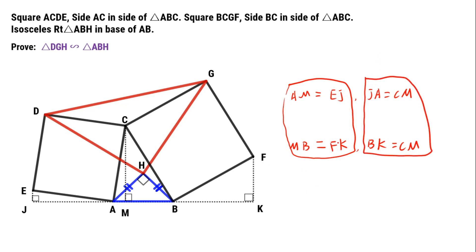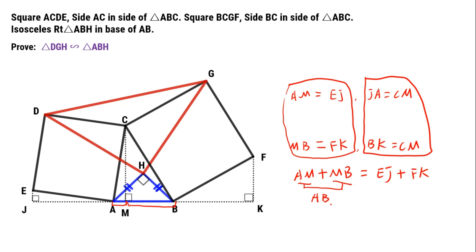We can get AM plus MB equals EJ plus FK. Since AM plus MB is segment AB, from these equations we get JA equals BK.